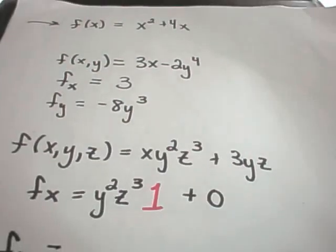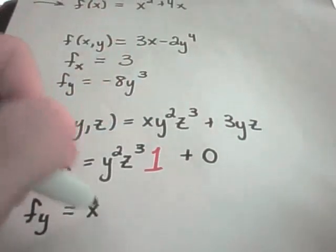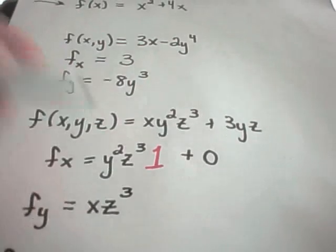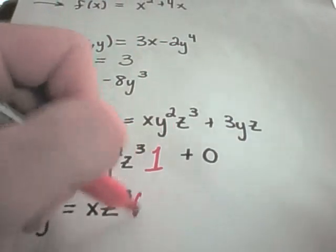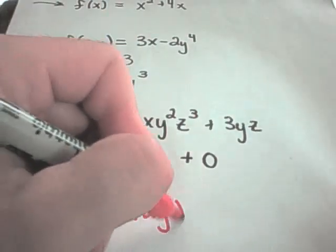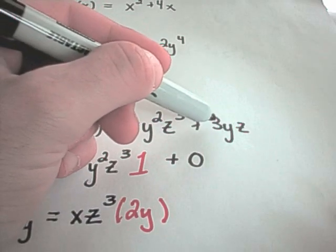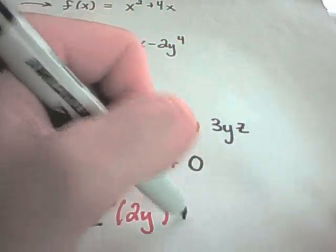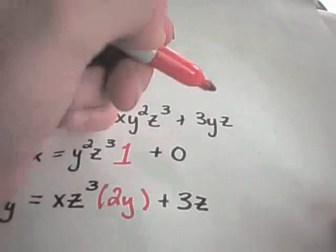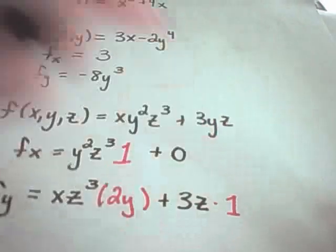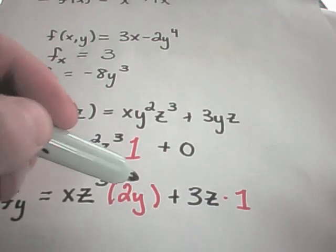If I take the partial derivative with respect to y, that means x and z cubed are constants. So I'll have x and z cubed — just pull them out front like you normally would with a constant — and the derivative of y squared is 2y. For the 3yz term, 3z is simply a constant that comes along, and the derivative of y is times 1. So you could rewrite this as 2xyz cubed plus 3z.